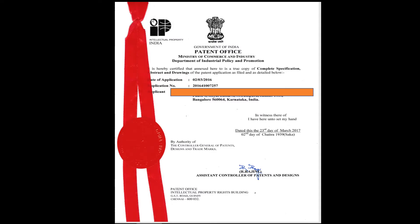This is how the priority document issued by the Indian Patent Office looks like. Here you can see the date of application, application number, applicant's full address, and below that the date on which the application is certified with the authority of the controller, journal of patents, design and trademark, and then the signature of the assistant controller of patents and designs. This is the covering letter of the priority document, and it has the enclosed copy of the specification as filed by the inventor or applicant.